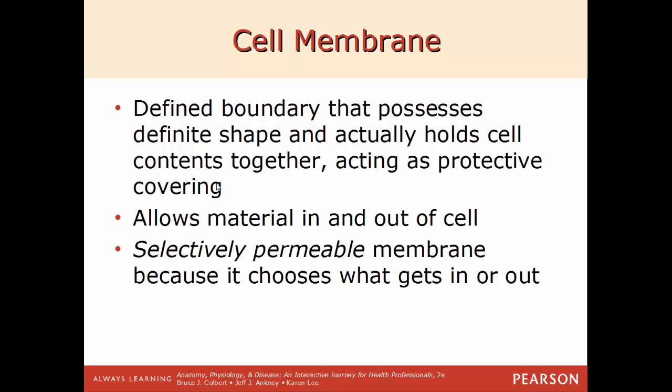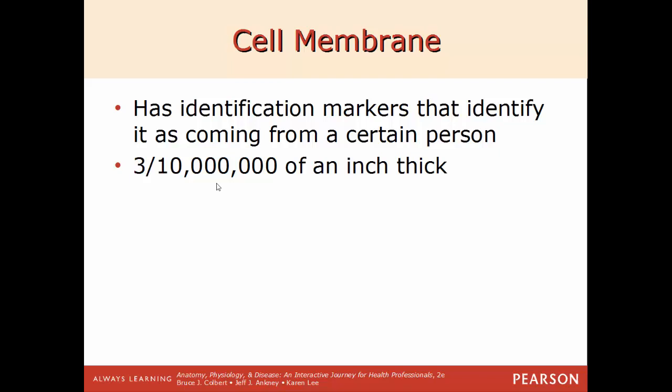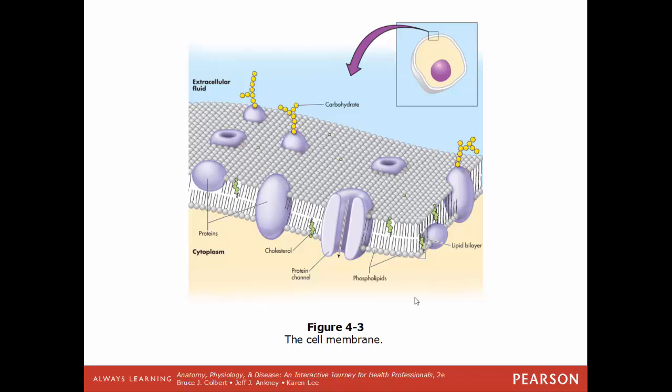Starting with the outermost portion, the cell membrane defines the shape of the cell and acts as a protective covering. It is described as selectively permeable, meaning some things can get in and some can't; it is selective about what is able to pass through and either enter or exit the cell. The cell membrane also has identification markers that identify it as being from a particular type of tissue and a particular individual. The thickness is approximately 3 ten-millionths of an inch.